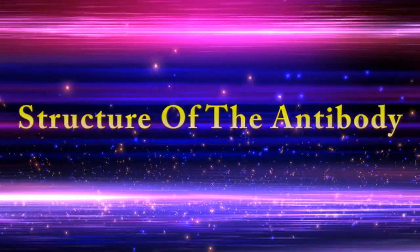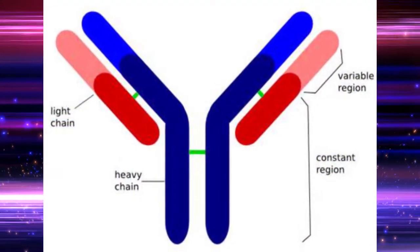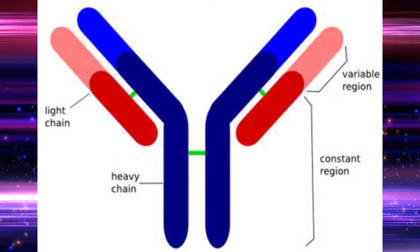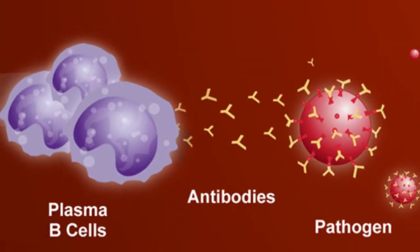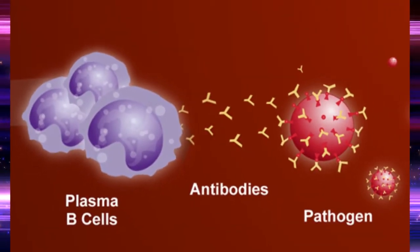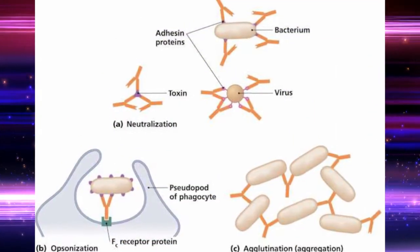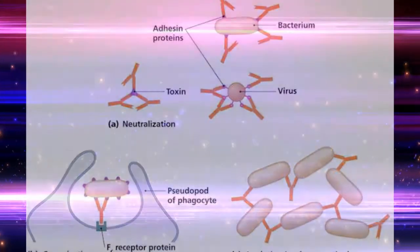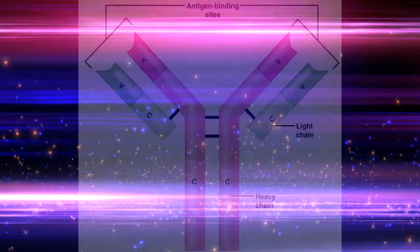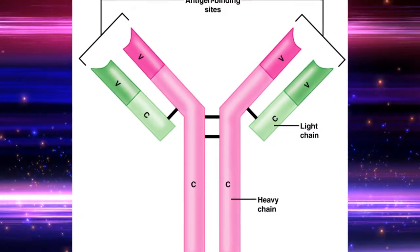Structure of Antibody. Antibodies are immune system related proteins called immunoglobulins. They are synthesized from plasma cells and are important for marking antigens for death or neutralization. Each antibody consists of four polypeptides.